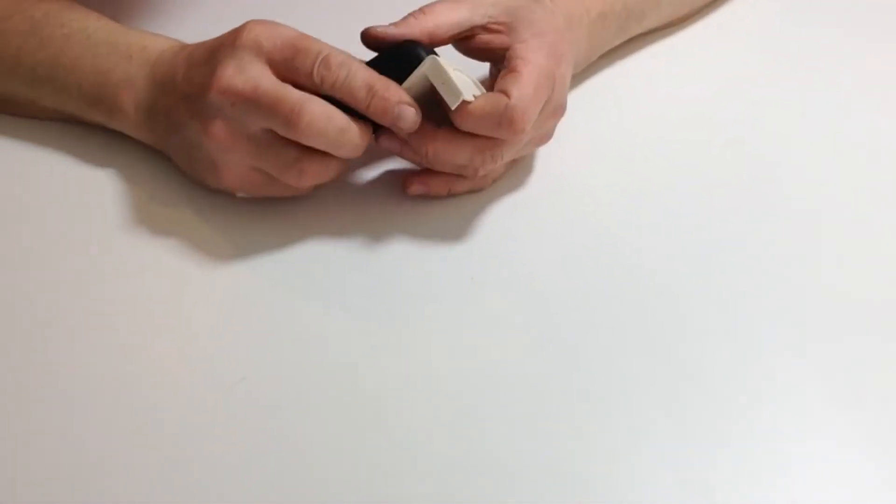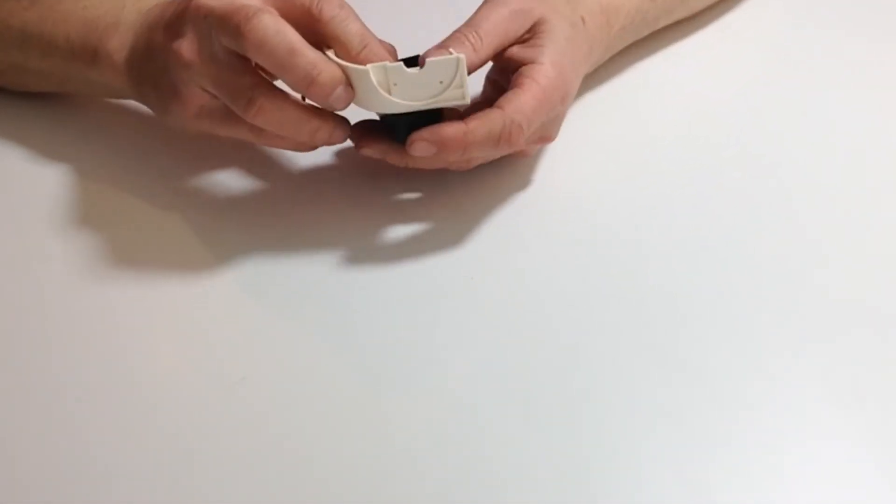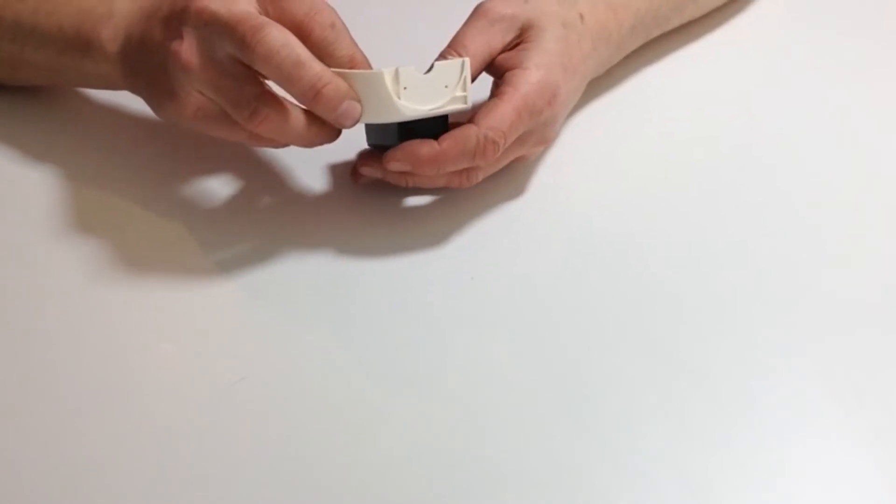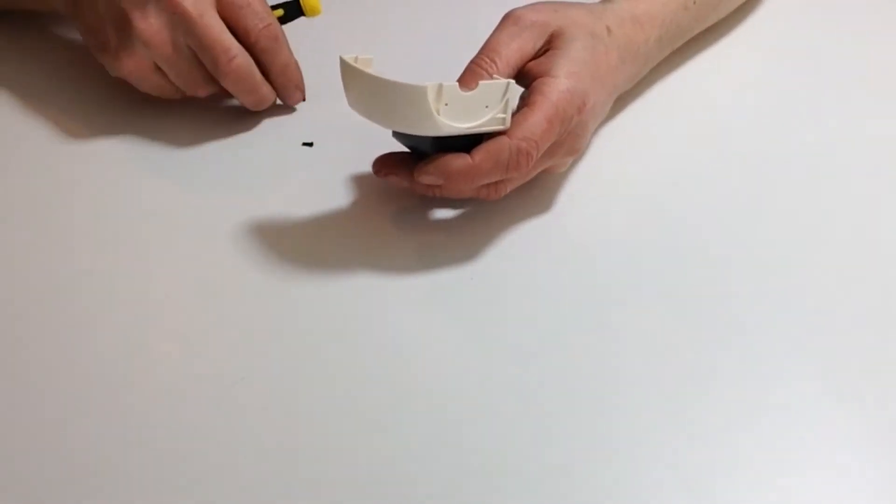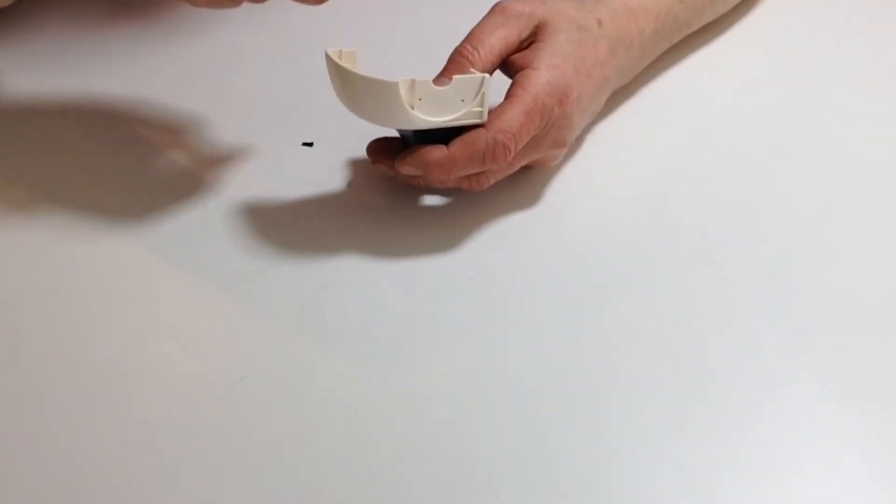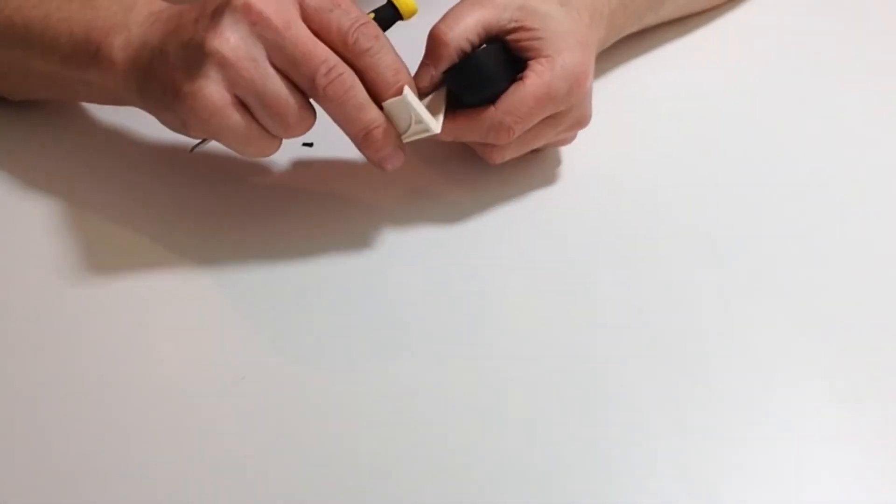In this stage we're going to be fitting the left chest and shoulder, exactly the same as what we did for the right hand side. Once again, taking two of the screws provided.